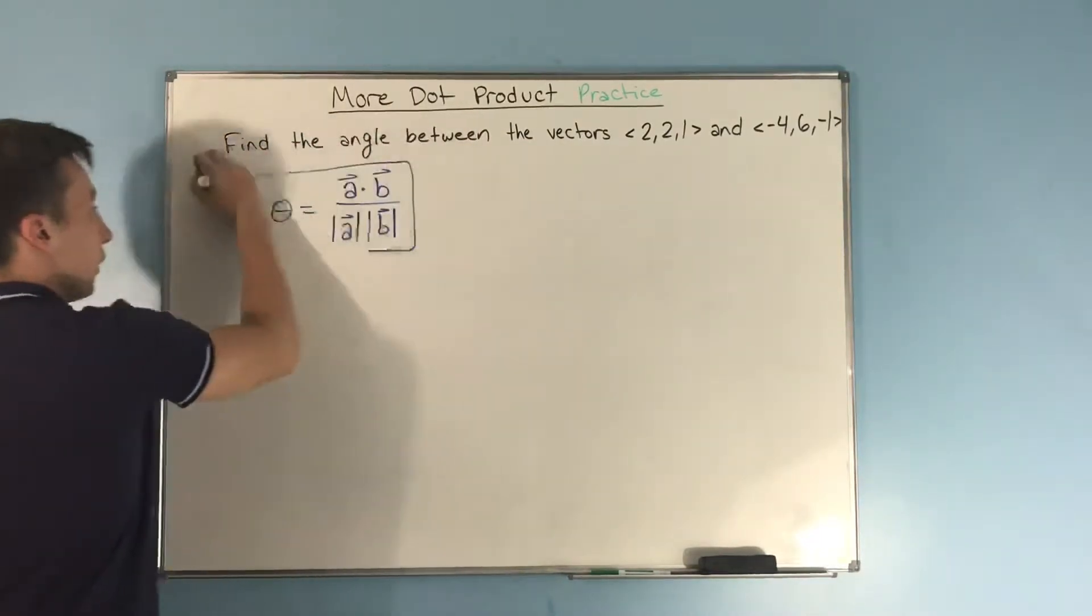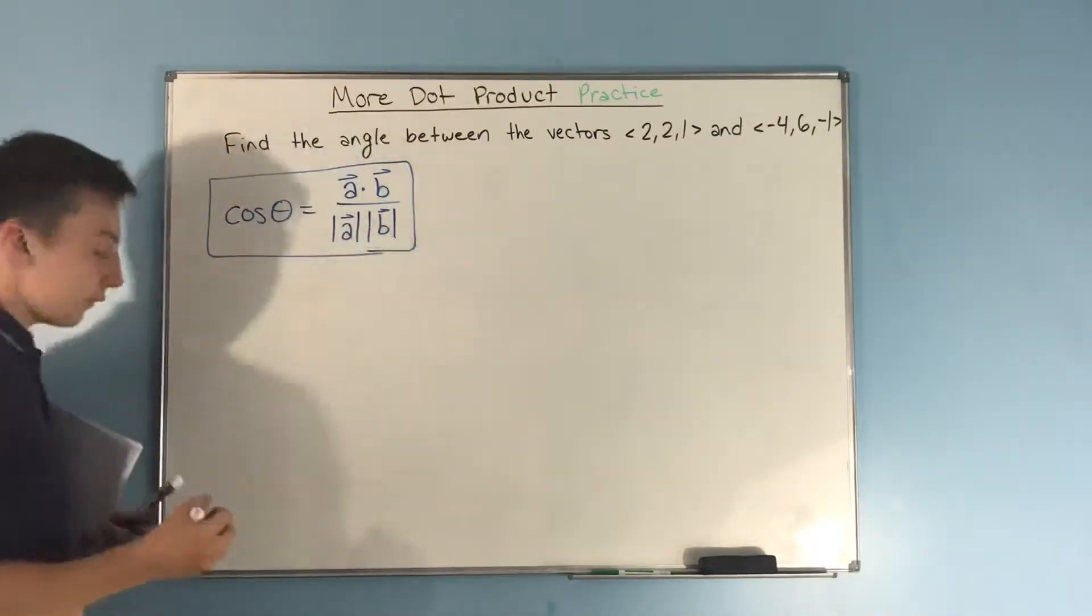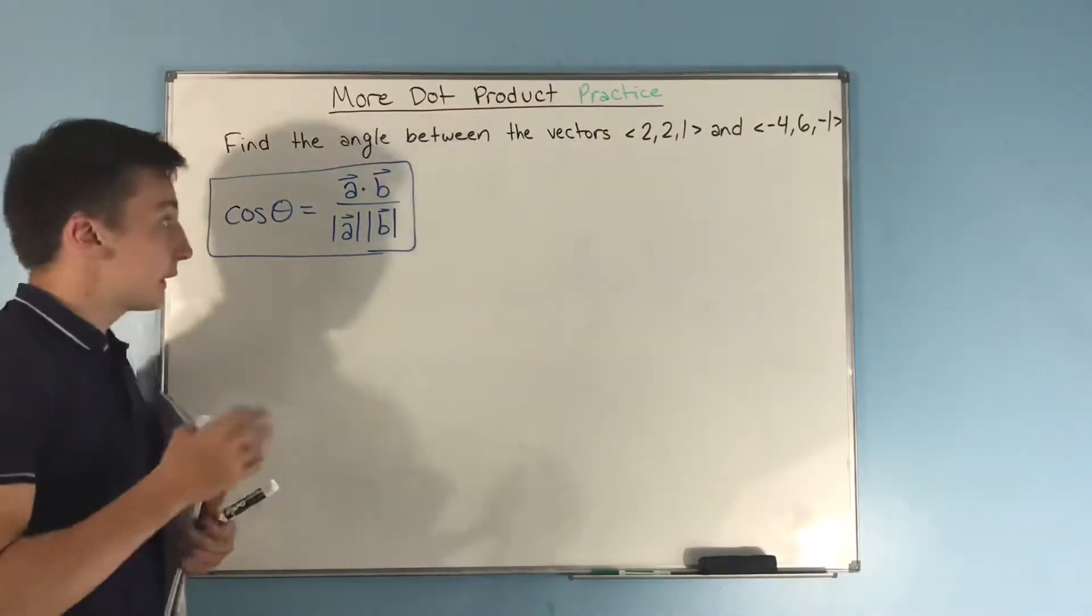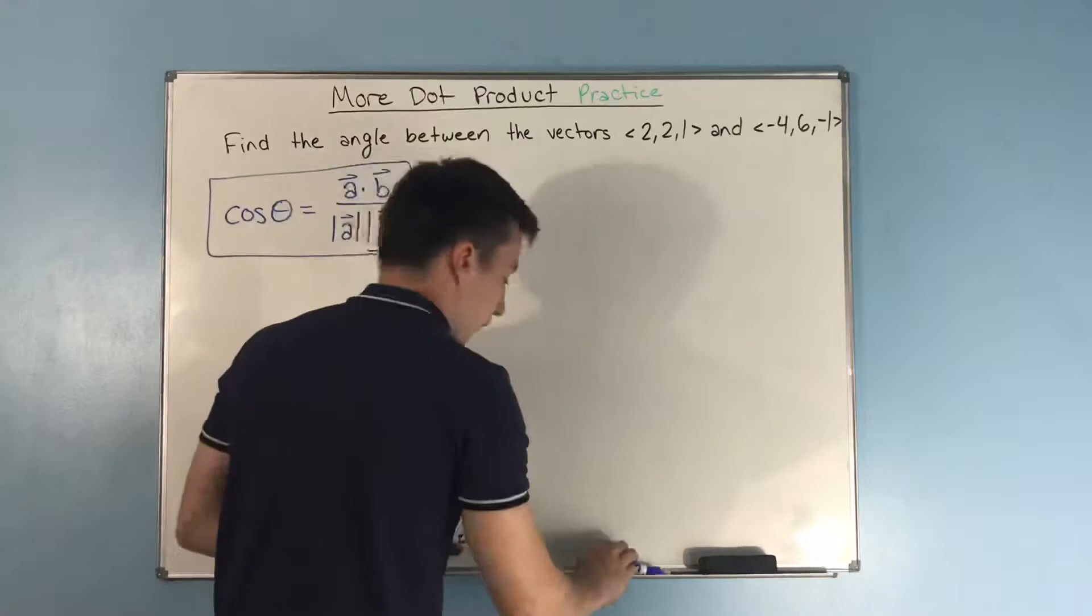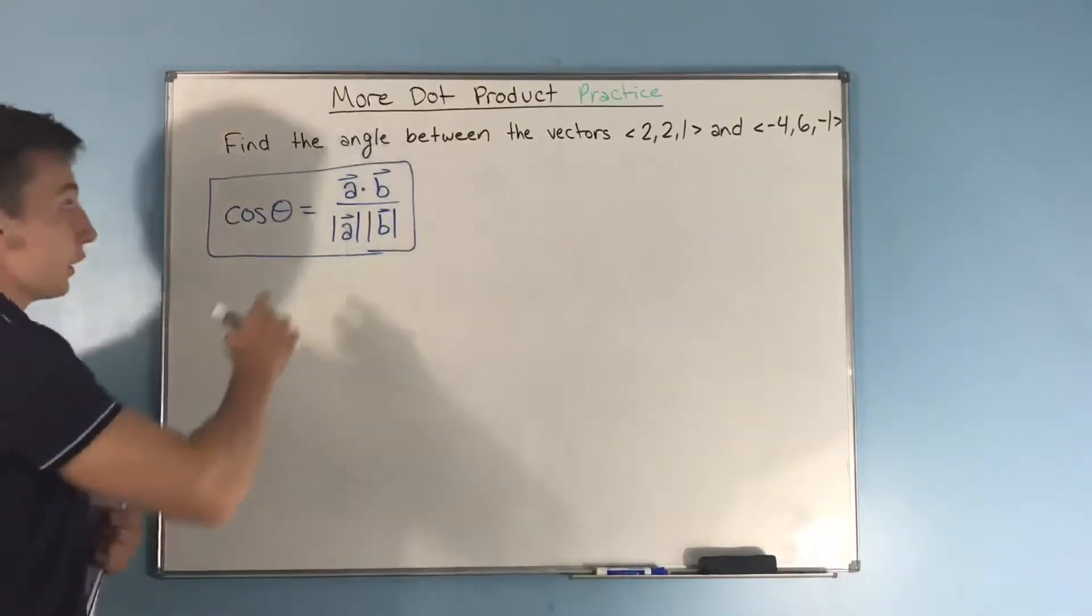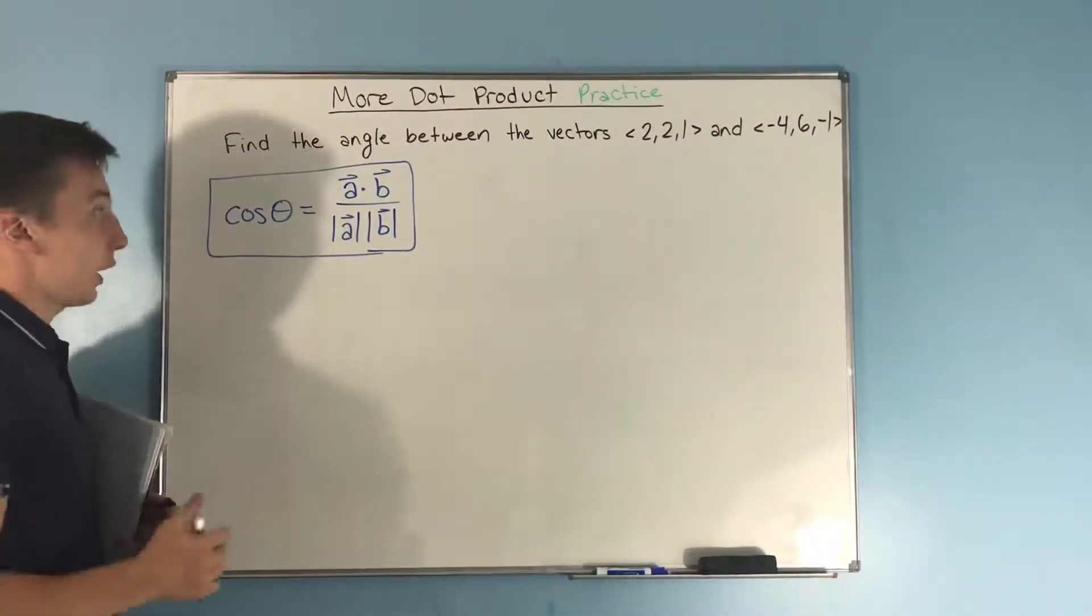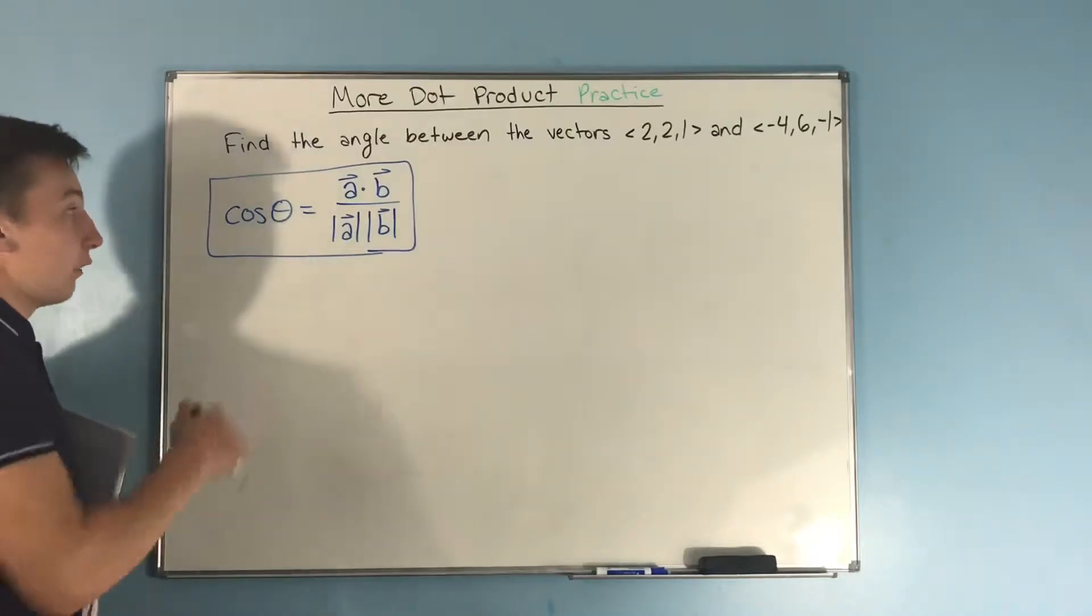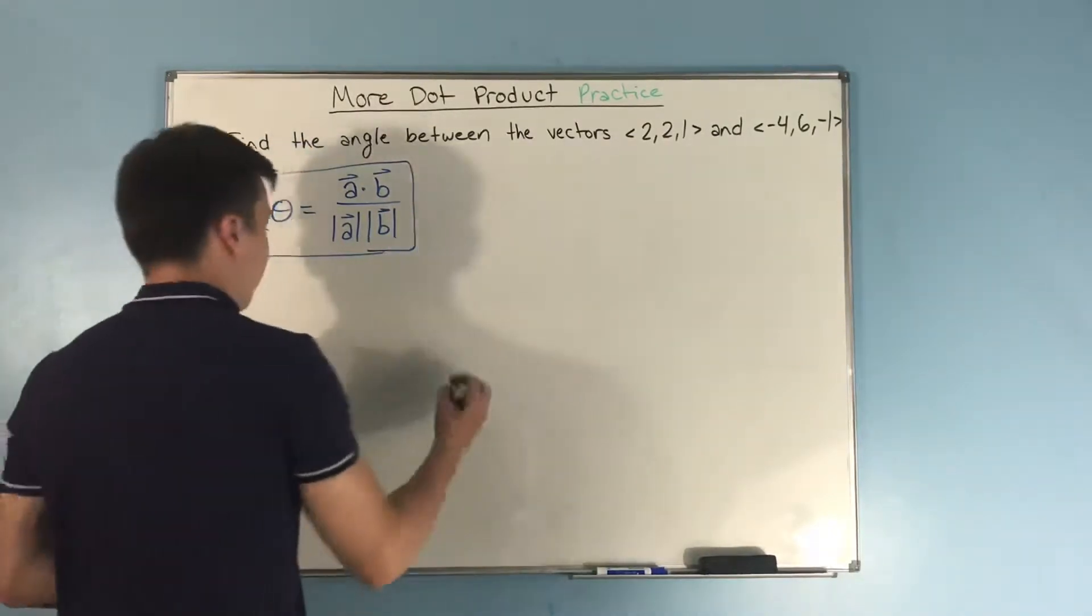You have to know this, that's got to be something that you know. Now, first, we need to find the dot product of a dot b. Let's find that.